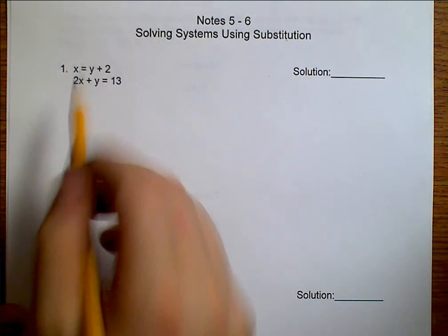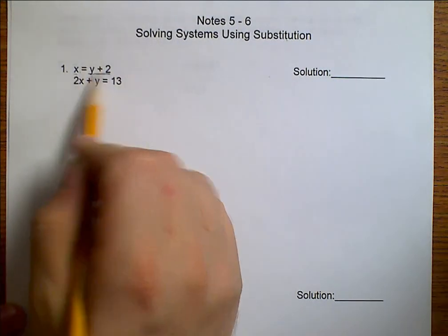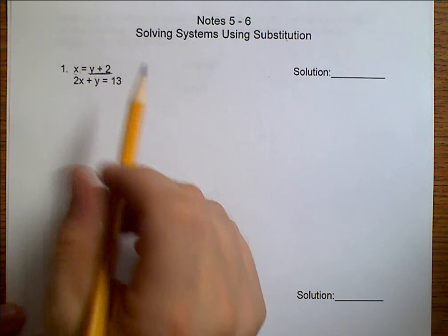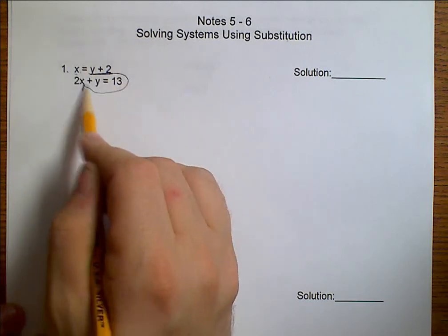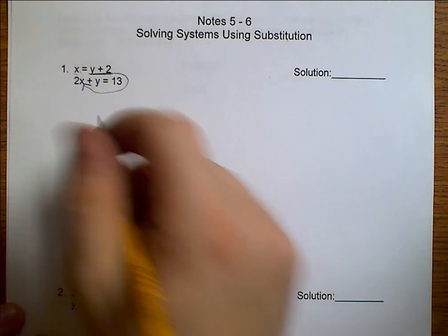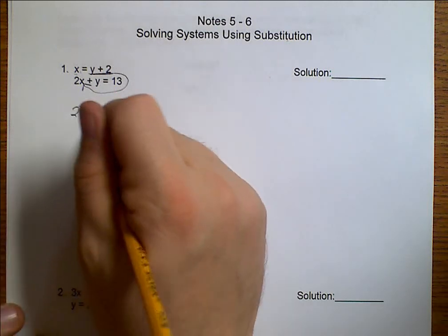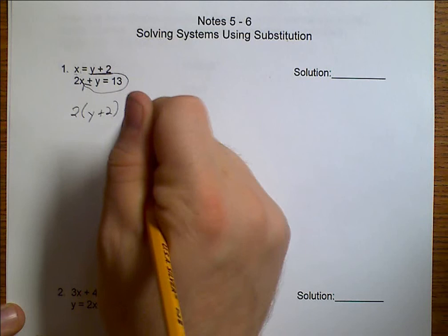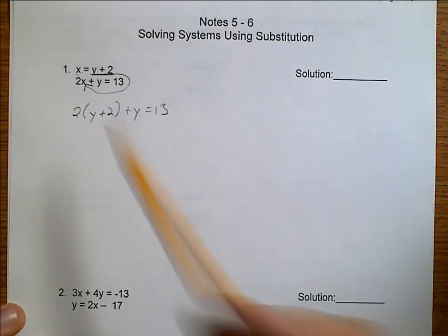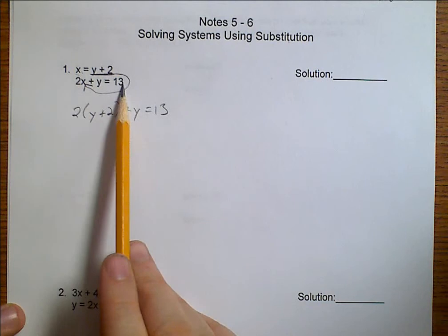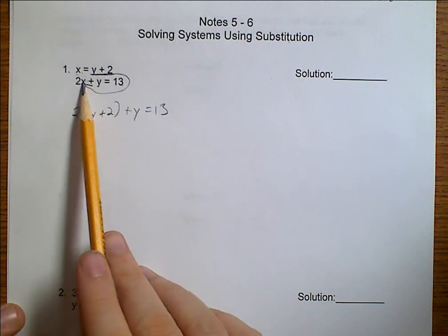We already know what X is. X is Y plus 2. Substitution means I'm going to take this Y plus 2, and I'm going to plug it into X. So, now I have 2 times Y plus 2 plus Y equals 13. Notice, all I've done was rewrite this second equation, replacing X with what I know X equals.